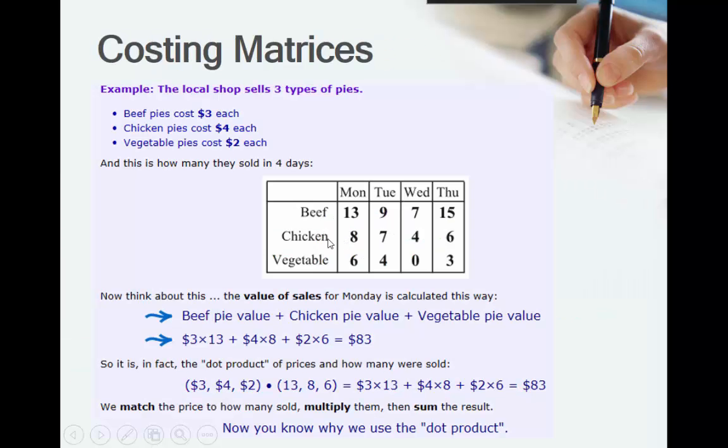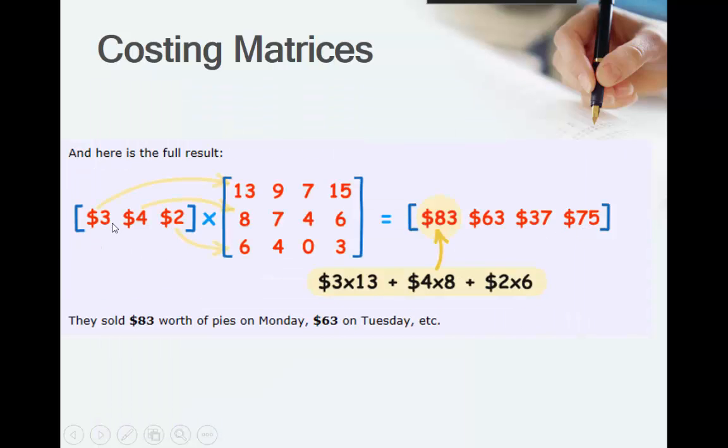The costing matrices. So, we do this more so when we have lots of information. So, here's an example of selling pies. You sold 13 big pies on a Monday, 9 on Tuesday, 7 on Wednesday, 15 on Thursday. And you're going to charge how much for each of these pies? Well, the cost is $3, $4 and $2.